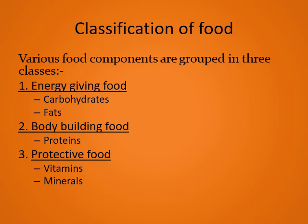Food items that contain these nutrients can be classified as energy-giving food, body-building food, and protective food. Energy-giving food items give a lot of energy — carbohydrates and fats are included in this group. Body-building food is important for the growth and maintenance of body cells — proteins are included in this group. Protective food protects us from various diseases and, though needed in small quantities, is essential for our body — vitamins and minerals are included in this type.